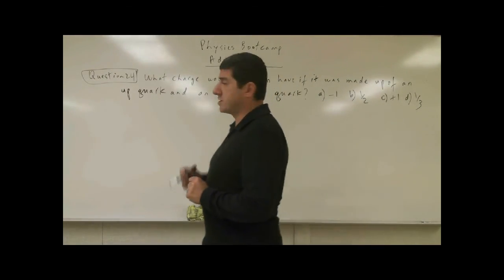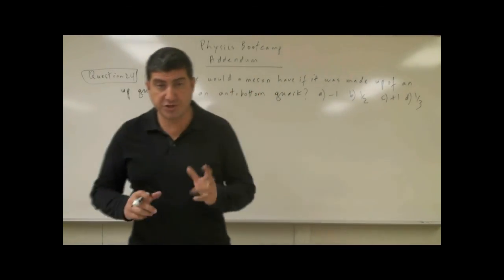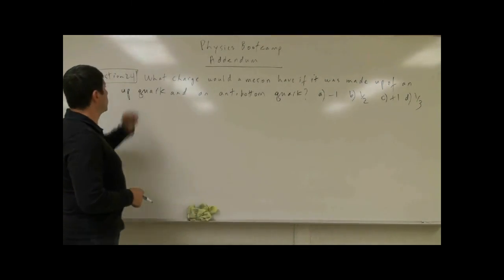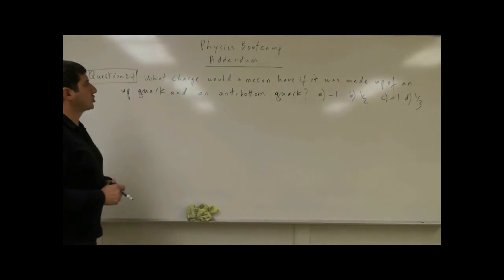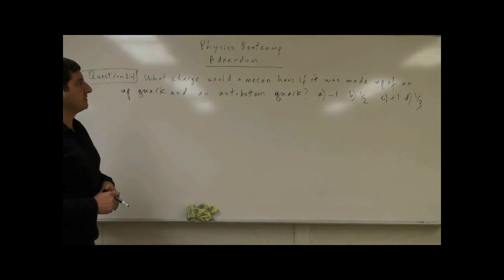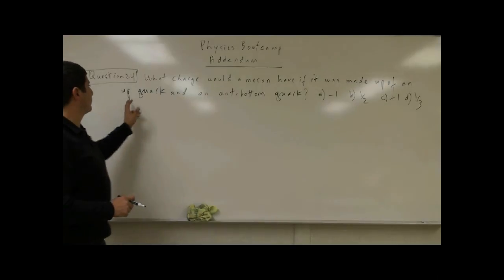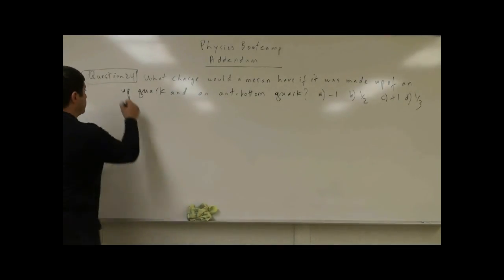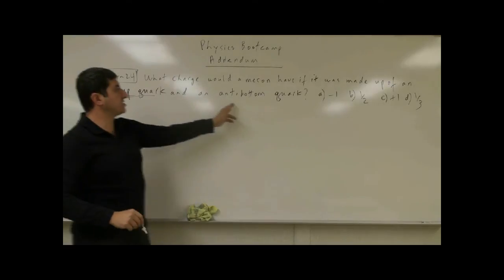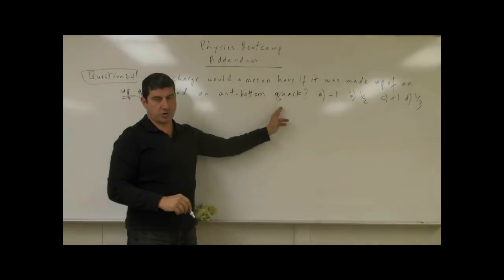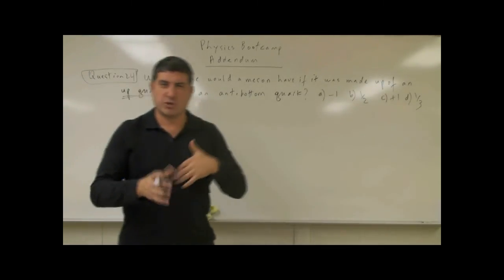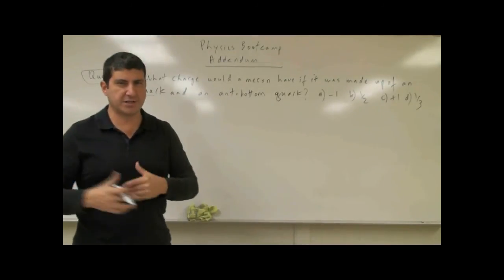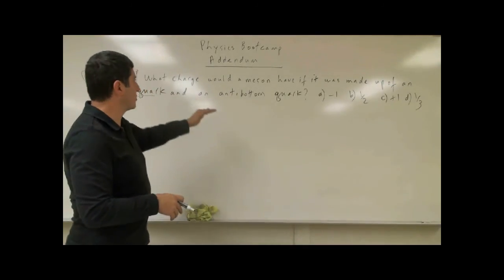The next set of questions are going to be about what's known as elementary particle physics. Question 24 says: what charge would a meson have if it was made up of an up quark and an anti-bottom quark? So what would its charge be? In order to give you a little background, I want to fill you in on what is going on.